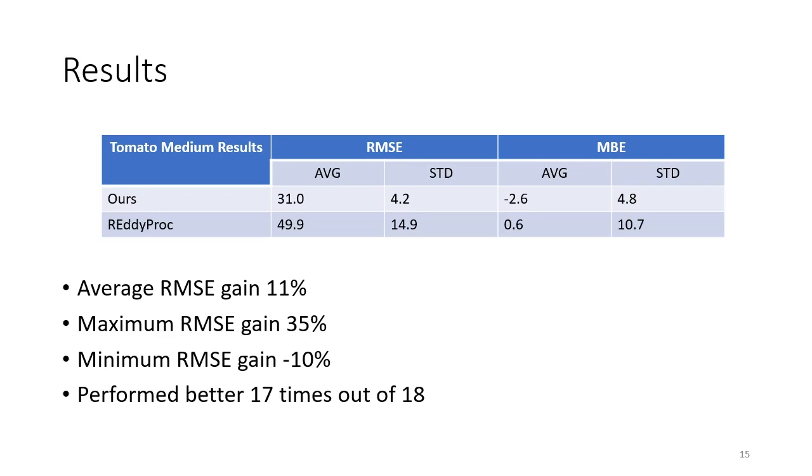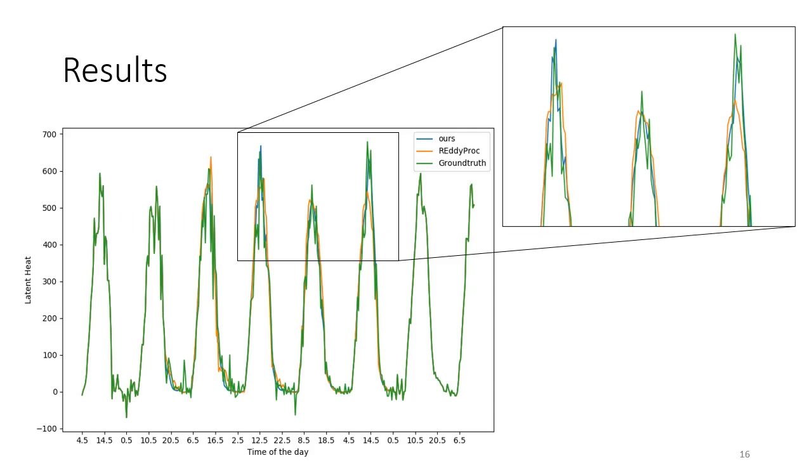In order to provide a practical example, here is a sequence that was predicted out of a six day gap. Our prediction can be seen in blue, the ground truth in green, and the output of RADPROC in orange. It can be observed that even though the difference is not very large, our prediction stays closer to the ground truth, in particular around evapotranspiration peaks.